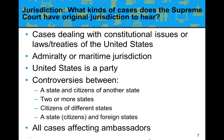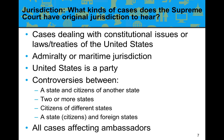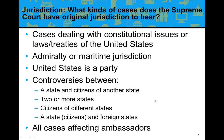That is the list of cases where the Supreme Court has original jurisdiction. All other cases start in federal trial court, and if appealed, go to the U.S. Courts of Appeals, and if appealed again, to the U.S. Supreme Court.